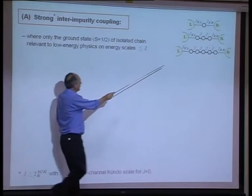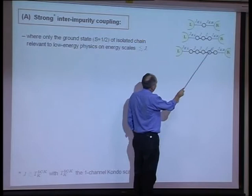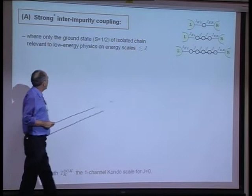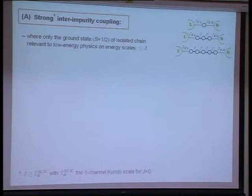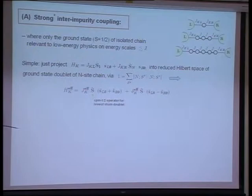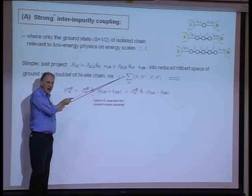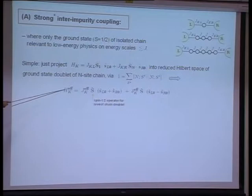So let's look first at the case of strong inter-impurity coupling J. The first point to notice is that if you look at the isolated chain itself — it's an odd-membered chain, a spin-one-half impurity, antiferromagnetically coupled — the ground state of that chain is itself a spin-one-half object. The excitations of the chain above the ground state are typically on the scale of J. So if you're interested in low-energy physics below the scale of J, only the ground state doublet of the isolated chain is relevant.